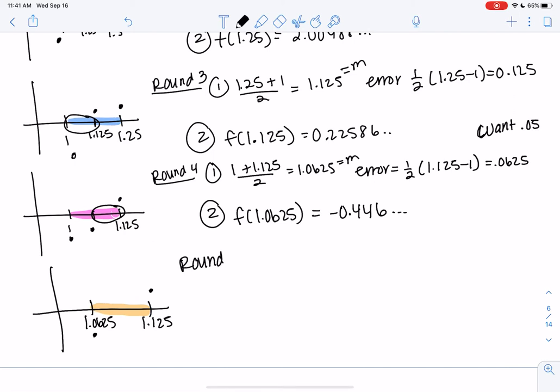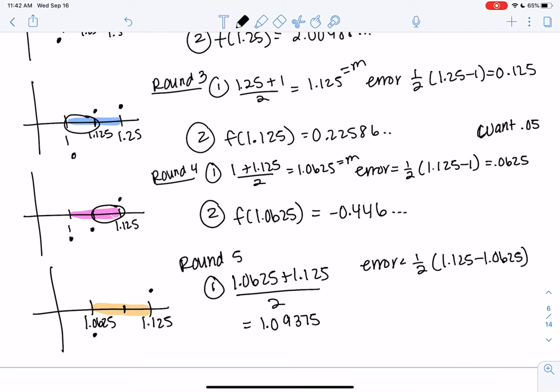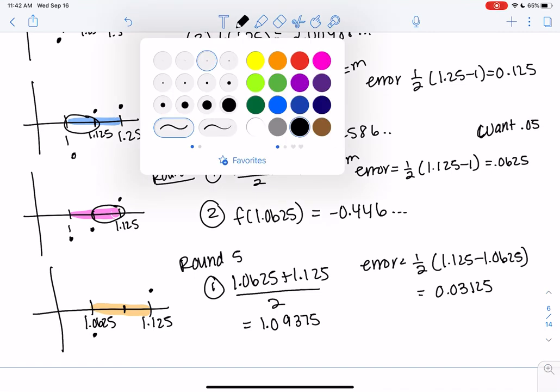So round 5. I promise you we're almost done. So let's find the midpoint. All over 2. And I got 1.09375. And then the error is less than half of the interval. So I'm just typing that on my calculator. And I got 0.03125. You'll notice the error is just cutting in half every round, actually. Because we just keep cutting the intervals in half. It's half of the previous one. And what is this? This is less than 0.05. So we're done.